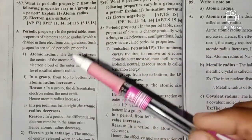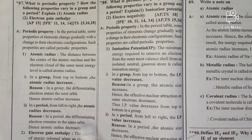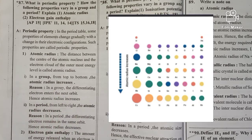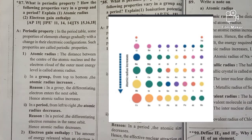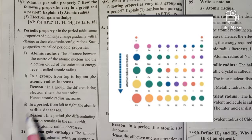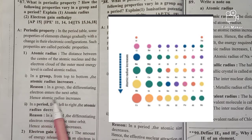In a group, from top to bottom, the atomic radius increases. The reason is that as we move down a group, each new electron enters a new orbit — the next orbit. Therefore, the atomic radius increases.